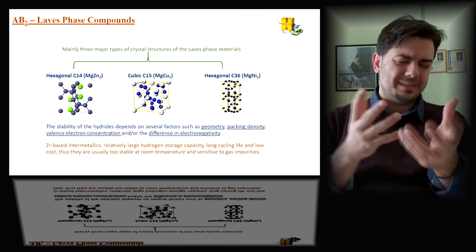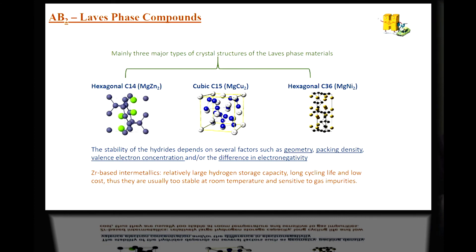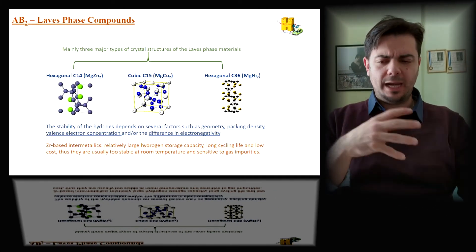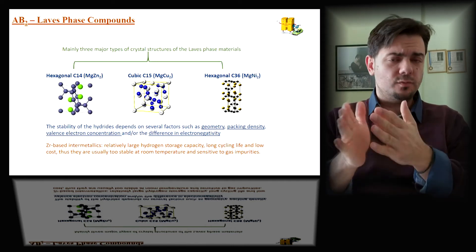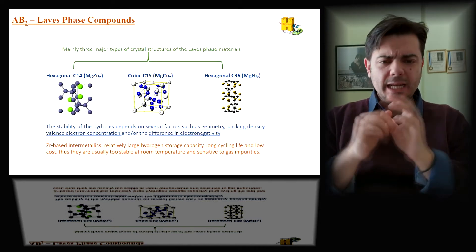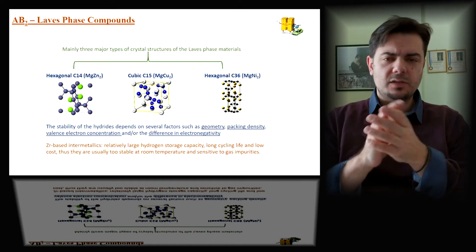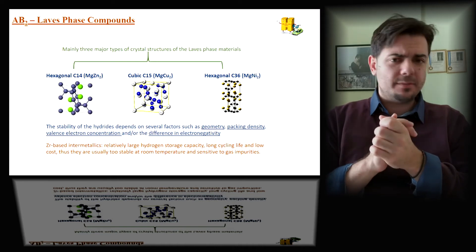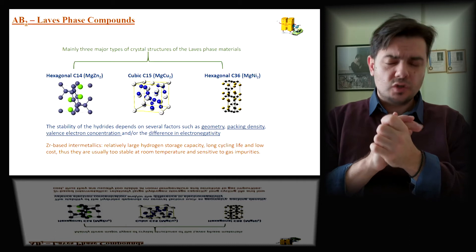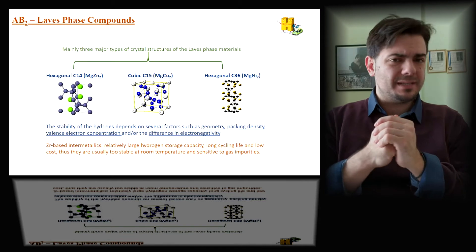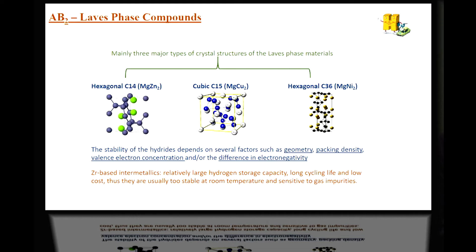Another family is the AB2. The family is sometimes called the LAVE phase compounds, where there are mostly three phases. We have the hexagonal C14, the magnesium zirconium-2 based, the cubic C15, the magnesium copper-2, and the hexagonal C36, the magnesium nickel-2. Those materials are mostly called by the community as the high-pressure materials, and they're used for both stationary and mobile applications. Normally, the industry uses those materials when it comes to building compressors, metal-hydride-based compressors. The most common part is the zirconium-based intermetallics. Why? Because they have a relatively large hydrogen storage capacity. Sometimes they can go up to 2% of the whole weight. They have long cycle life and relatively low cost. On the other hand, sometimes when it comes to activation, we might need some high energy activation for those materials.